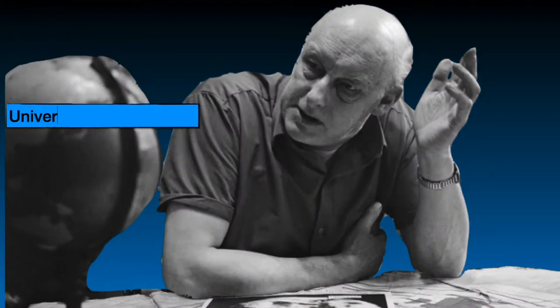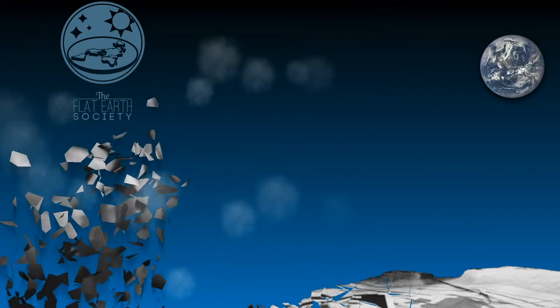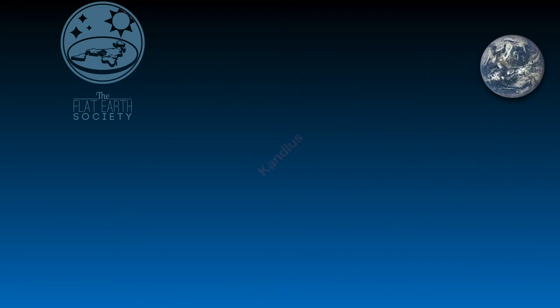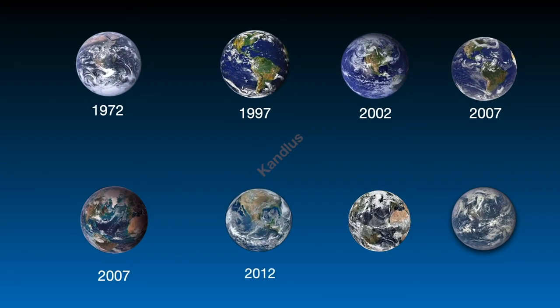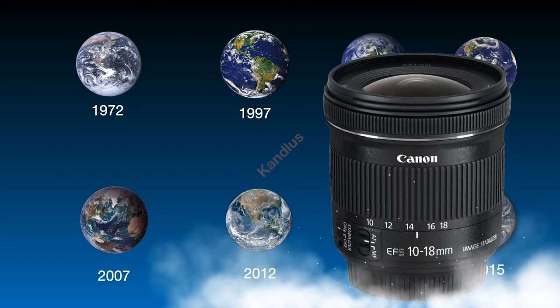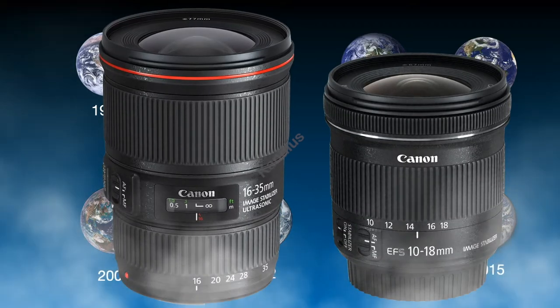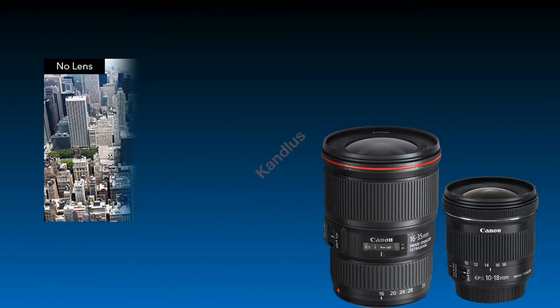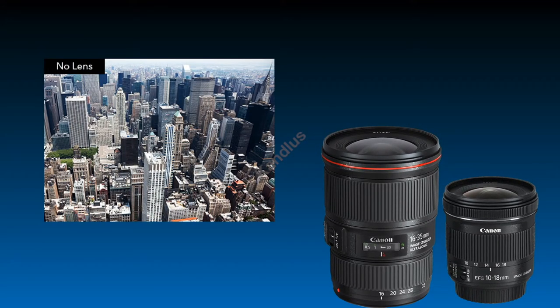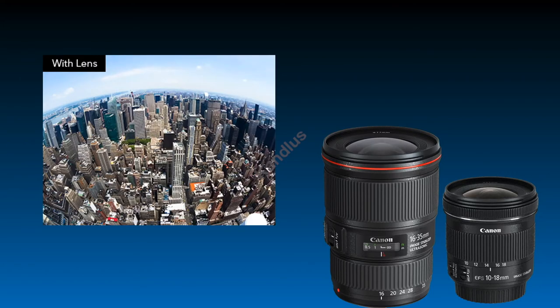Samuel Shenton replaced the Universal Zetetic Society in 1956 with the Flat Earth Society. He condemned the space agencies for the photos and images taken by the astronauts, claiming that it's easy to see how their photos and images were taken with wide-angle lenses, which easily deceived the human eye. Convex photos can be taken with these lenses. For example, this image was taken without a lens, but this image was taken with a lens.